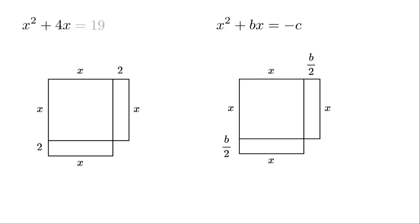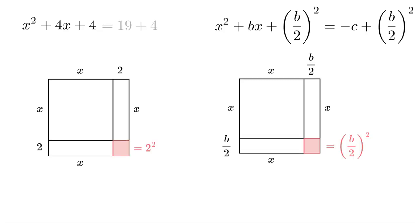The missing part is equal to 4 over 2 squared. You might like to play that part again and pay attention to how the algebra and the shapes change together.